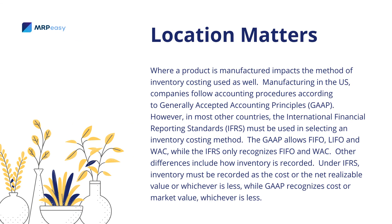Where a product is manufactured impacts the method of inventory costing used as well. Companies manufacturing in the U.S. follow accounting procedures according to Generally Accepted Accounting Principles, or GAAP. However, in most other countries, the International Financial Reporting Standards, or IFRS, must be used. GAAP allows FIFO, LIFO, and weighted average cost, while IFRS only recognizes FIFO and weighted average cost. Other differences include how inventory is recorded: under IFRS, inventory must be recorded at cost or net realizable value, whichever is less, while GAAP recognizes cost or market value, whichever is less.